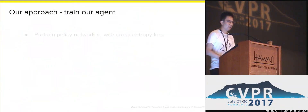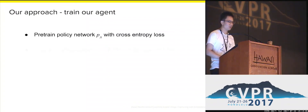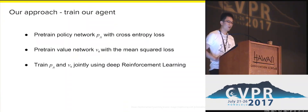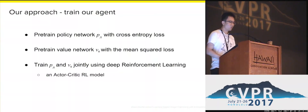We train our agent by first pre-training the policy network with cross-entropy loss, which is the standard loss, and then pre-training the value network with mean square loss to regress it to the reward. Then, we train them jointly using deep reinforcement learning. We use the actor-critic reinforcement learning model and follow the MIXER training mechanism.